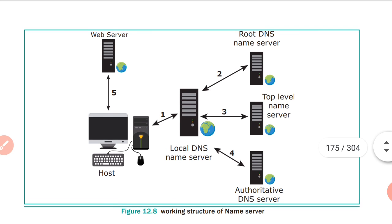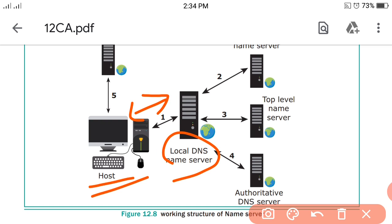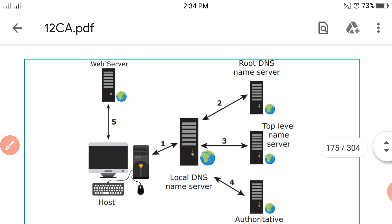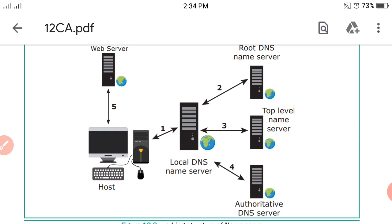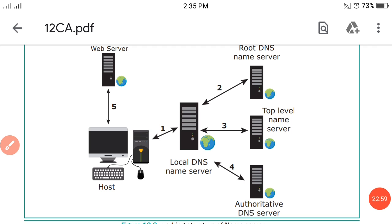Referring to figure 12.8: the working structure of a name server. In the diagram, the main host connects to the local name server, which then moves to the top-level server, then to an authoritative DNS server, and finally returns the data back through numbered steps one to five.